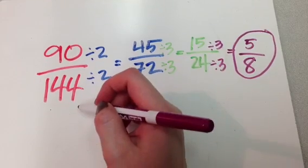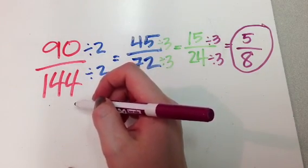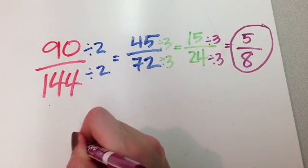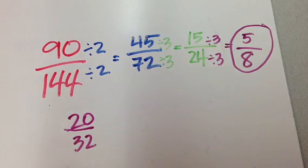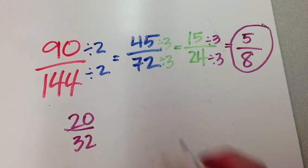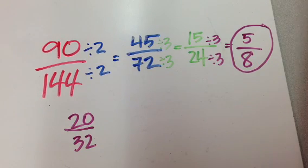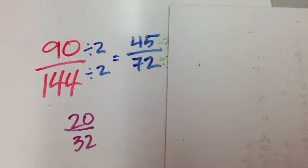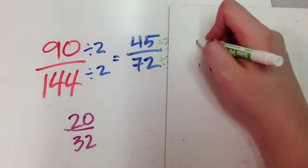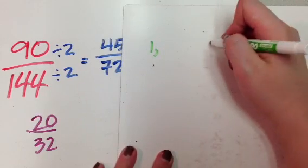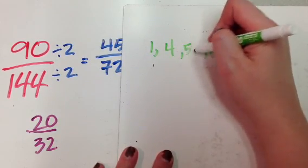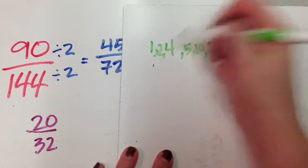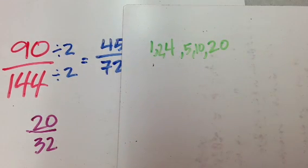If I had this though, if I had a fraction like this, then I could use greatest common factor. I could figure out that my factors of twenty, what are my factors of twenty? Well, I have one and twenty, right? And I have four and five. Oh, and I forgot a couple. Two and ten, right? Those are the factors of twenty.